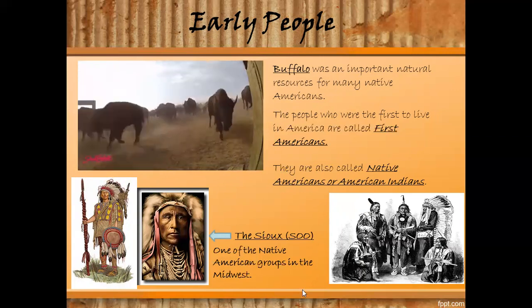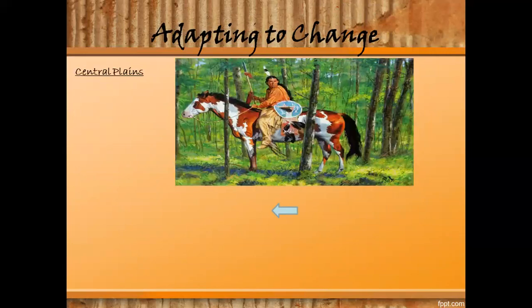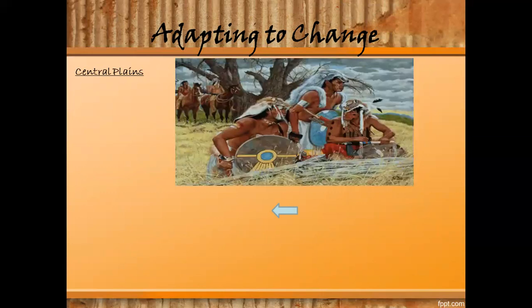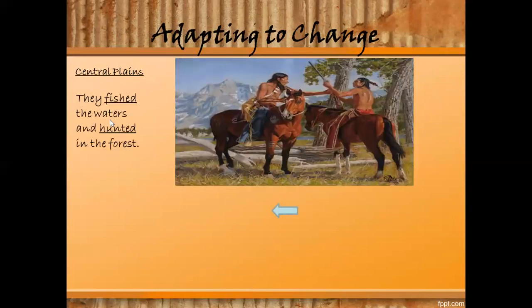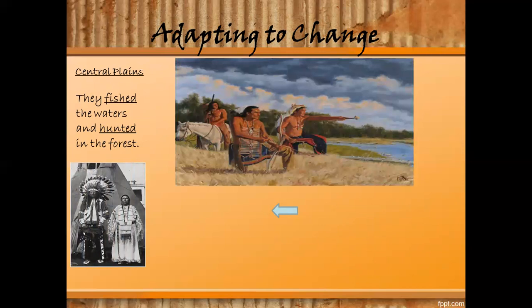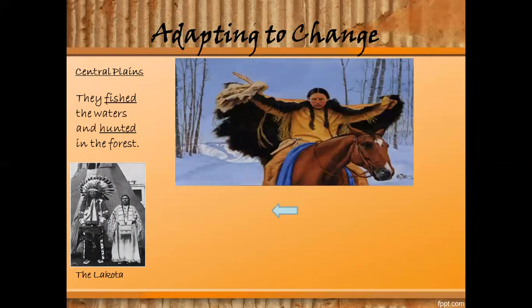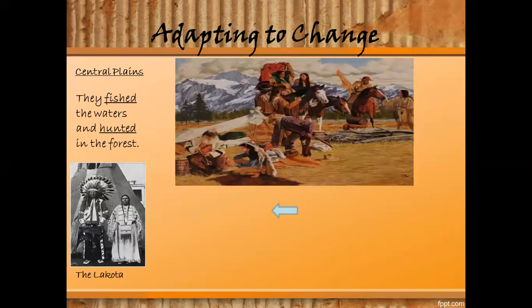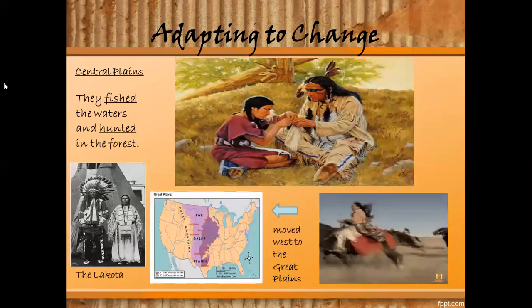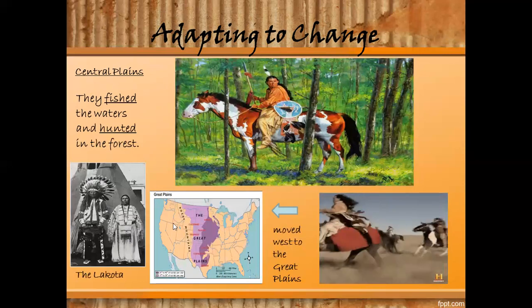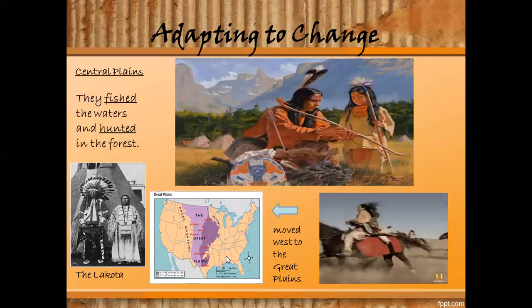Let's find out more about the Sioux. They lived in villages along the rivers and lakes of the Central Plains, where they fished the waters, hunted the forest, and some also learned farming. But when European settlers came to the Central Plains, the Lakota and many other Sioux tribes moved west to the Central Plains. Many European settlers and explorers wanted to control the area, so these Native people had to move from one place to another to survive and make a living.